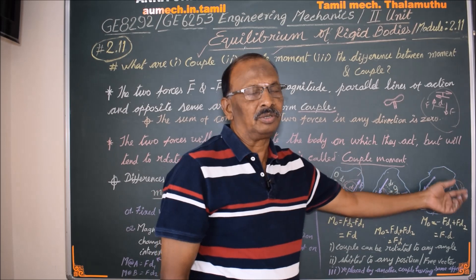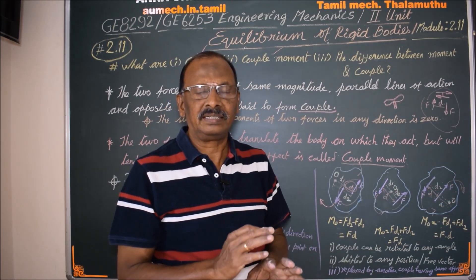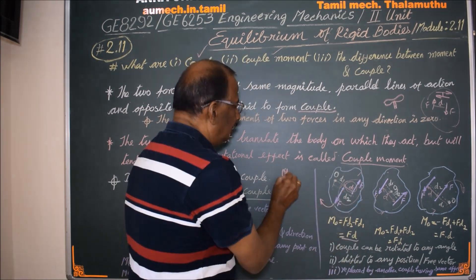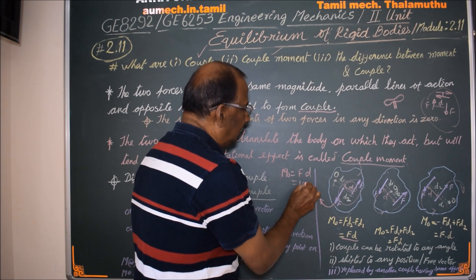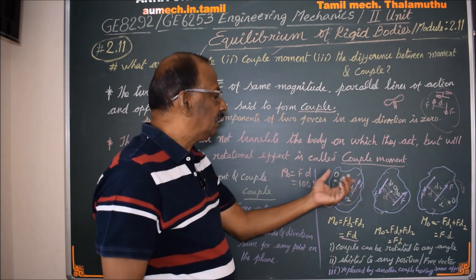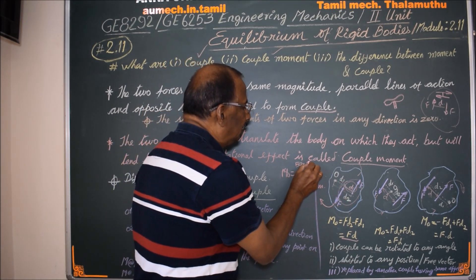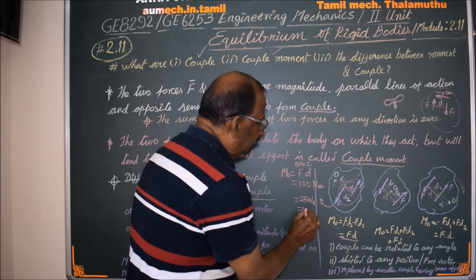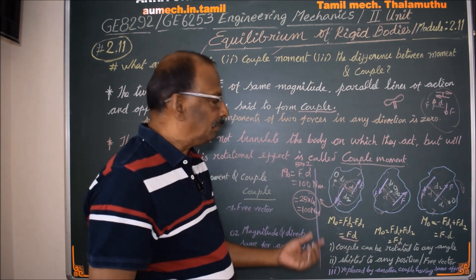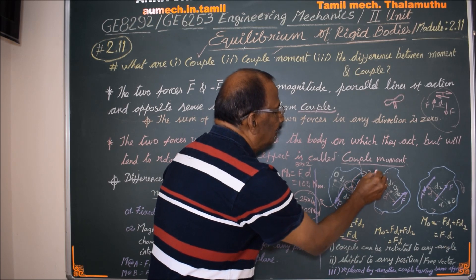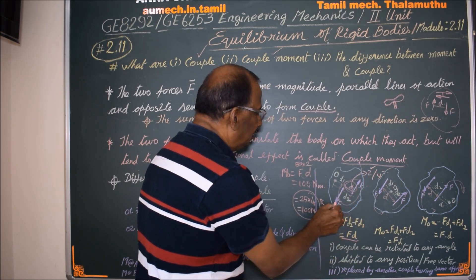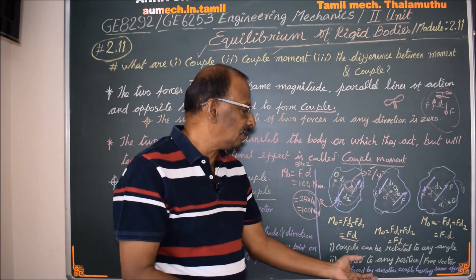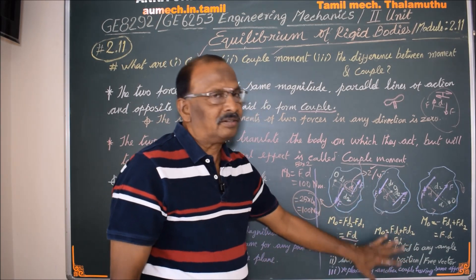If it is a free vector, it is a rigid body property. The rigid body is affected by the same effect regardless of position. A couple can be replaced by another couple having the same moment effect. For example, if the force magnitude is 15 and the effect is 25, we can replace the couple in calculations. These are the characteristics of a couple.